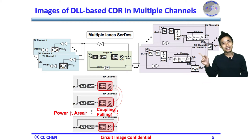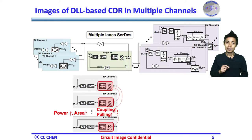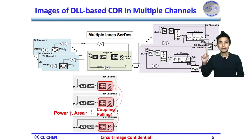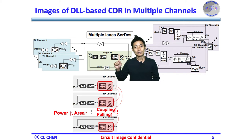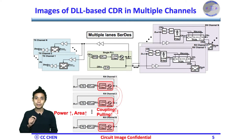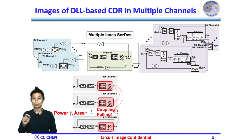Even though the DLL-based CDR requires a PLL to provide the reference clock, multiple CDRs can share a common PLL-based reference clock generator among multiple lanes in a SerDes. So the SerDes system could only need a single PLL. Therefore, the DLL-based CDR would mitigate the issues of multiple VCO coupling, pulling, high power dissipation, and large area of the PLL-based CDR per channel, which we discussed last time.